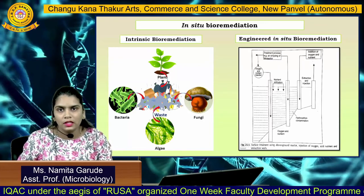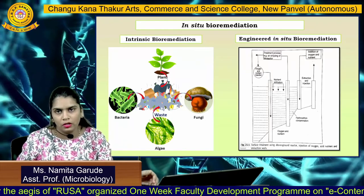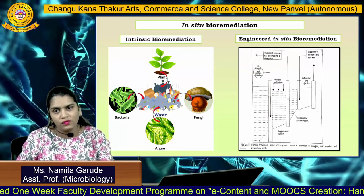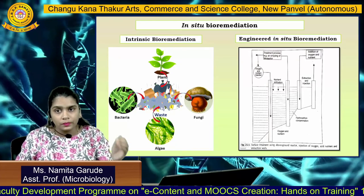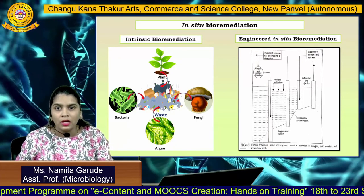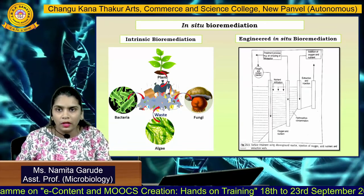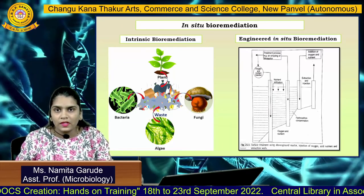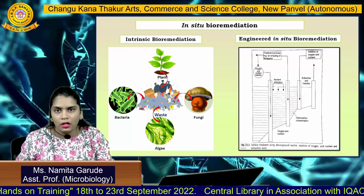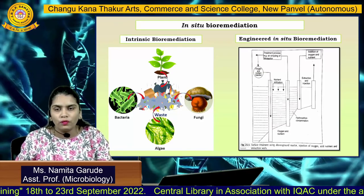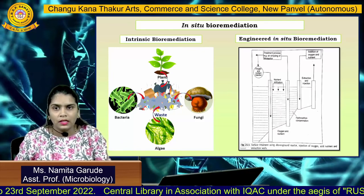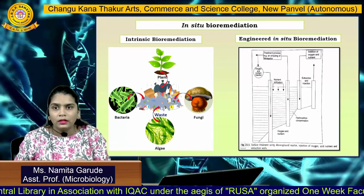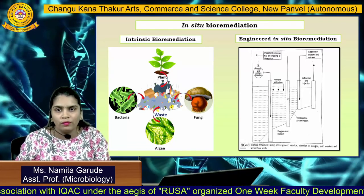In intrinsic bioremediation, the inherent or natural capacity of microorganisms to remove contaminants from the contamination site is utilized. This natural capacity can be tested for metabolism of contaminants at both laboratory and field levels. Factors that favor microbial growth in intrinsic bioremediation include groundwater flow, carbonate components for continuous buffering and acidity, nutrient availability, and electron transport for the growth of microorganisms.